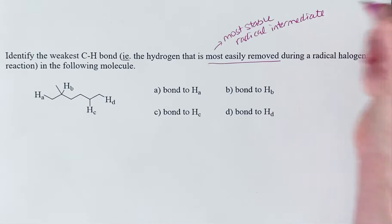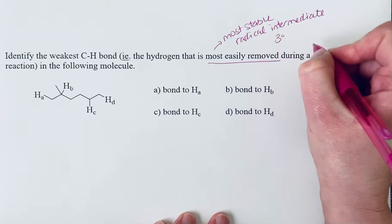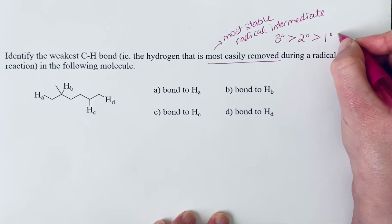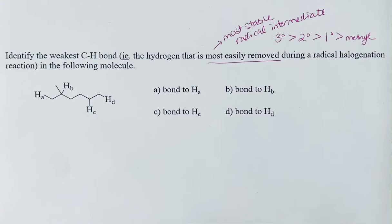And the stability of radicals exactly parallels the stability of carbocations. So we know that tertiary radicals are more stable than secondary radicals, which are more stable than primary radicals, which are more stable than methyl radicals.